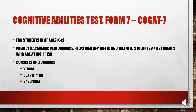Then there's the CogAT-7, the Cognitive Abilities Test Form 7. It's used for students in grades K through 12, predicts academic performance, helps identify gifted and talented students and those who aren't, and consists of three domains: verbal, quantitative, and nonverbal. You can remember the CogAT-7 by thinking about how the name literally says it's assessing cognitive abilities, and the 7 reminds you it's for groups of students — like 7 or 700 students — so you can see which ones are gifted and which are at risk.